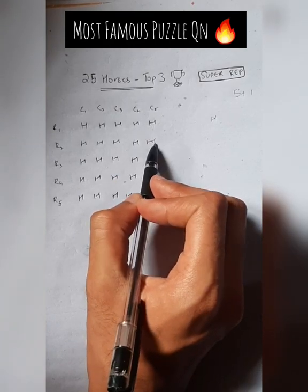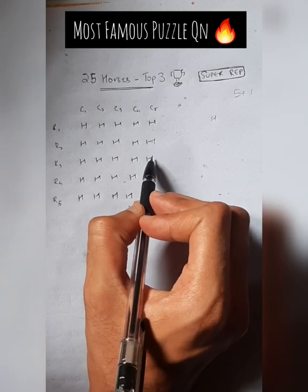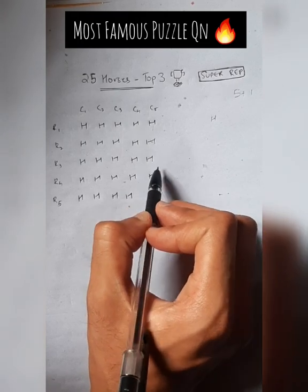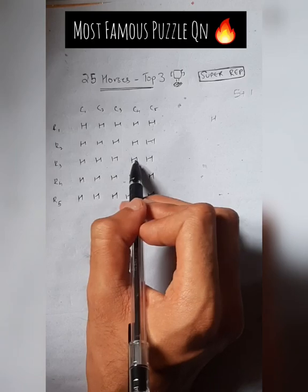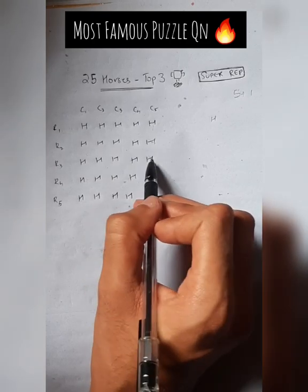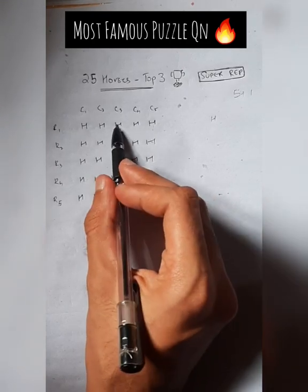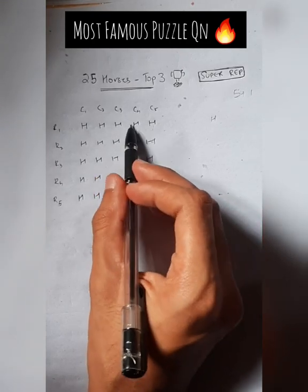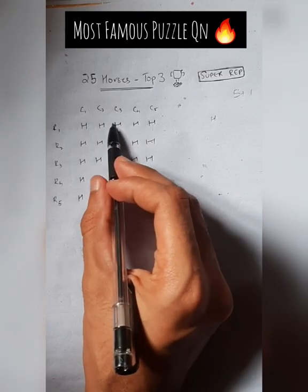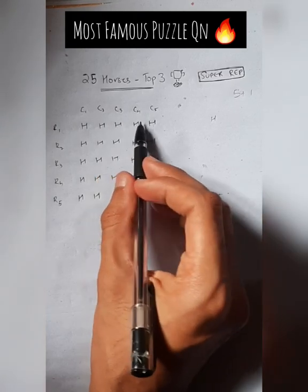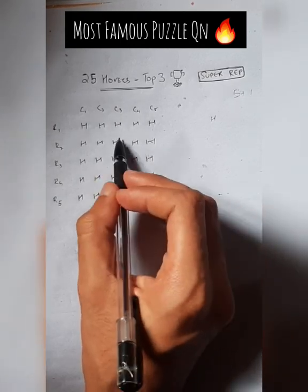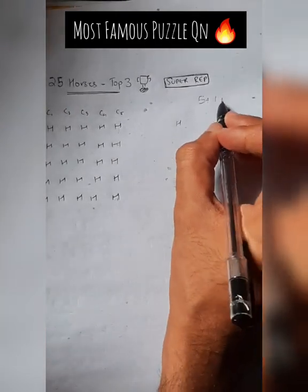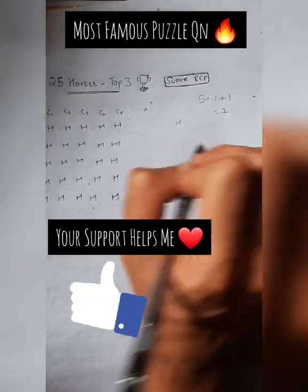For third position, the same logic applies. The third-place horse is faster than all below it in its column, just as we did for second place. So these five horses race one final time, making the total number of races seven.